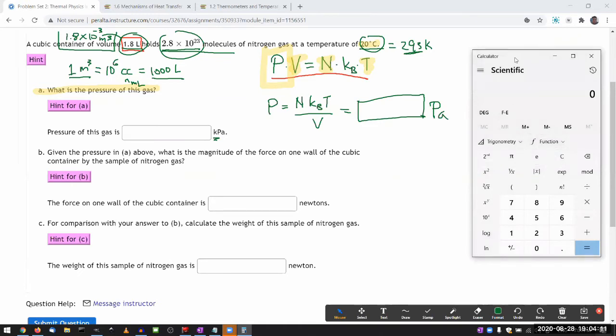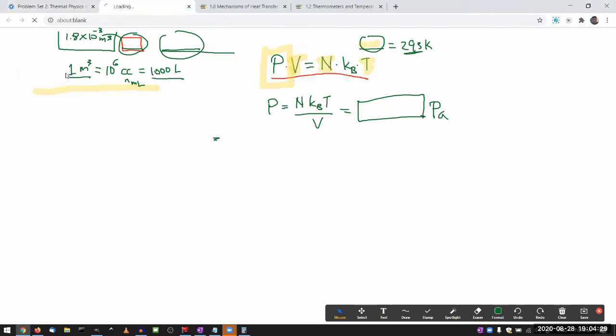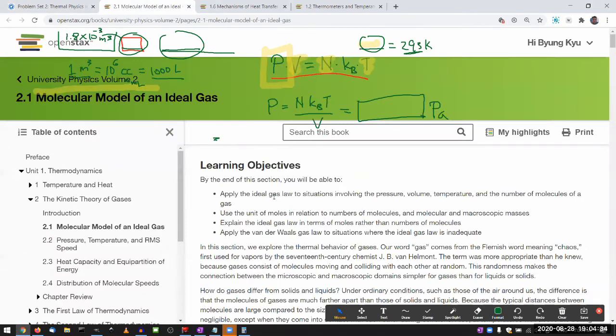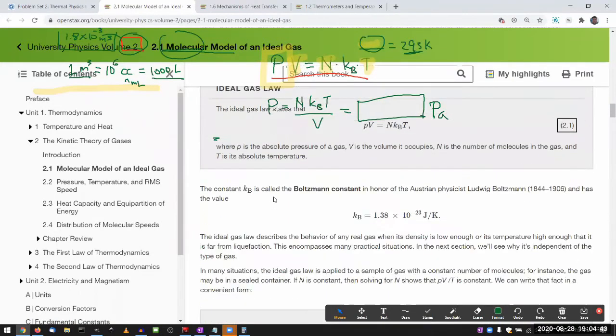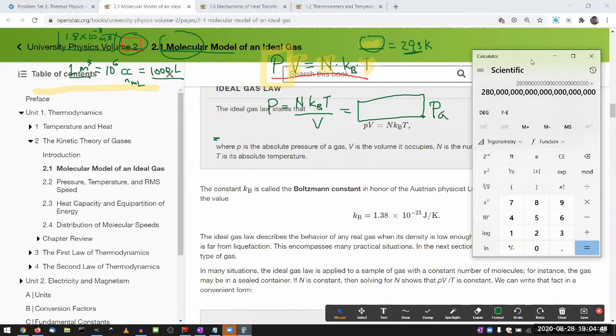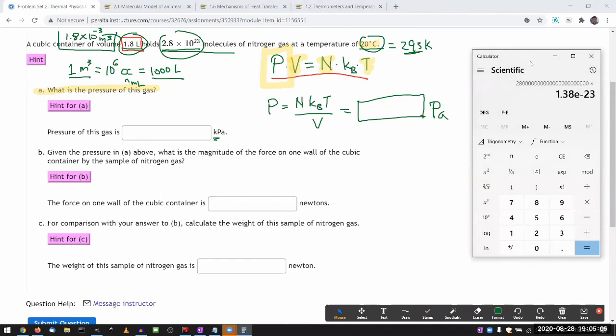So N is 2.8 times raised to power of 10 to the 23 times Boltzmann constant. Oh, I don't have that sit in one of the hints. It's not you to look up, look it up in the textbook. Yeah, I don't think I have that one memorized. So let me look up the Boltzmann constant and plug it in it. Yeah, there it is. So times Boltzmann constant, 1.38, 1.38 times 10 to the power of minus 23. Okay, good. Let me go back. And temperature, 293. So times 293, divide by the volume, 1.8 times 10 to the power of minus 3.